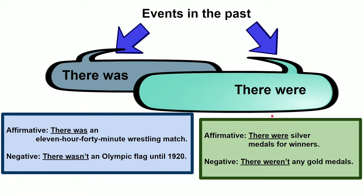There were — in the affirmative form: there were silver medals for winners. Negative: there weren't any gold medals. To describe events in the past, you either use 'there was' or 'there wasn't', 'there were' or 'there weren't'.